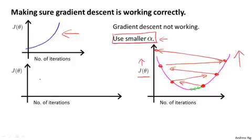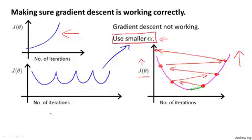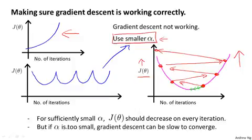Similarly, sometimes you may also see J of theta go down for a while, then go up, then go down, then go up, and so on. The fix for something like this is also to use a smaller value of alpha. I'm not going to prove it here, but under mild assumptions about the cost function J — which does hold true for linear regression — you can show that if your learning rate alpha is small enough, then J of theta should decrease on every single iteration. So if this doesn't happen, it probably means alpha is too big and you should set it smaller.